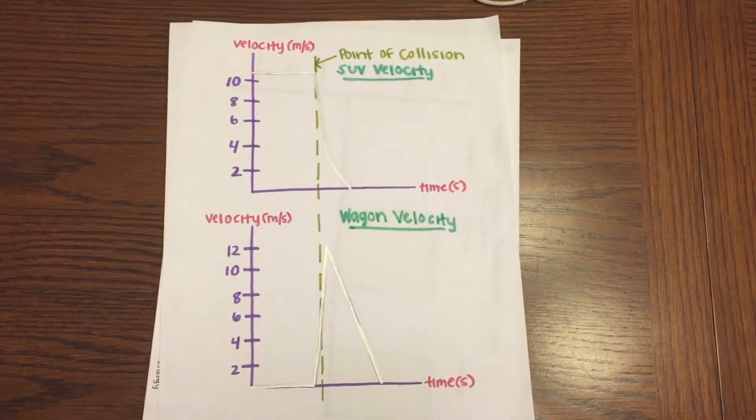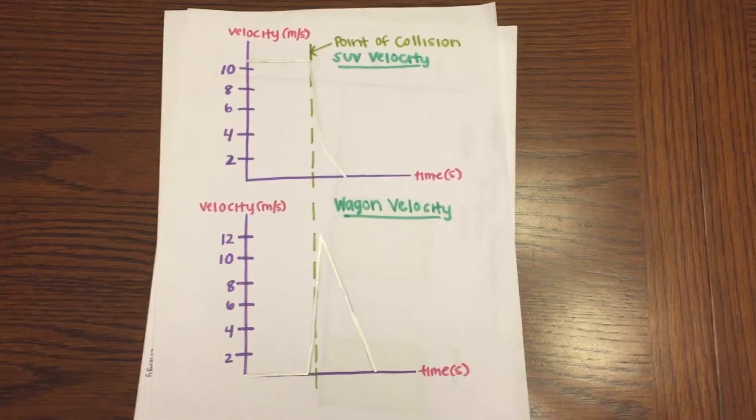These velocity time graphs show the velocity of the SUV and the wagon before and after the collision.